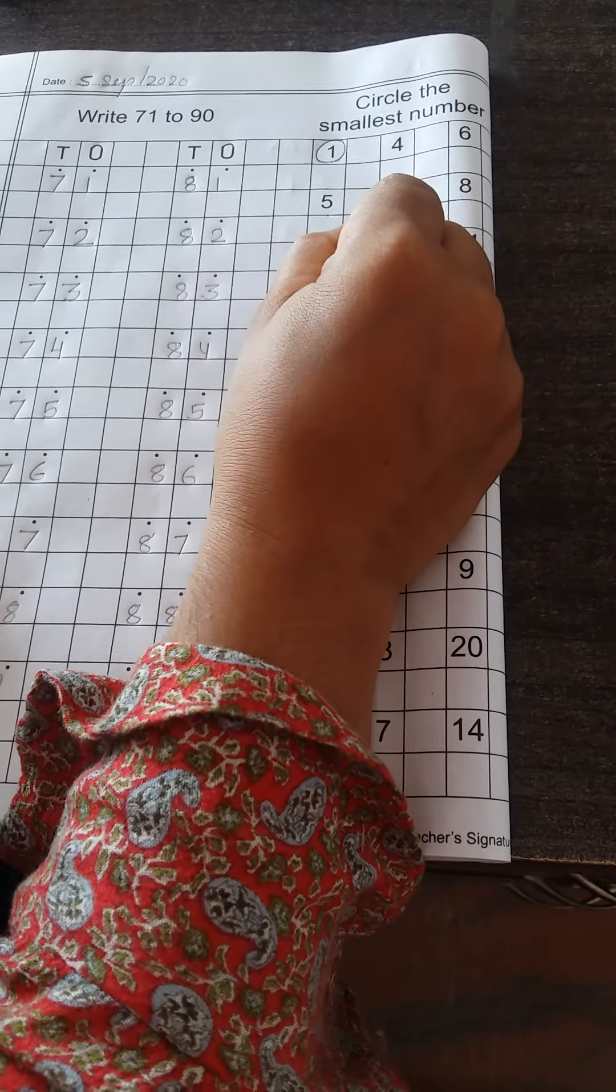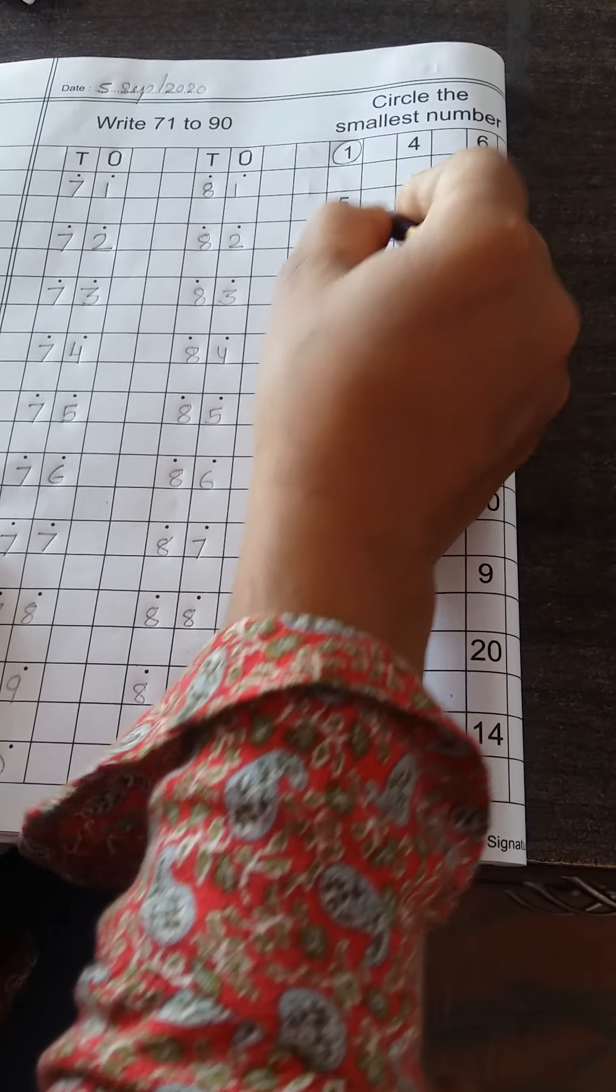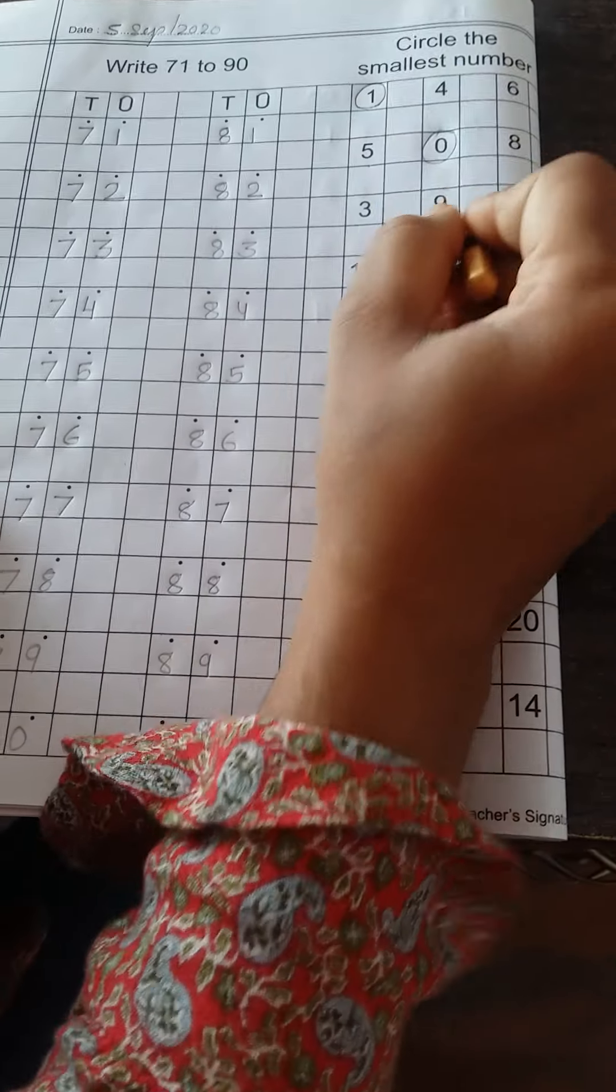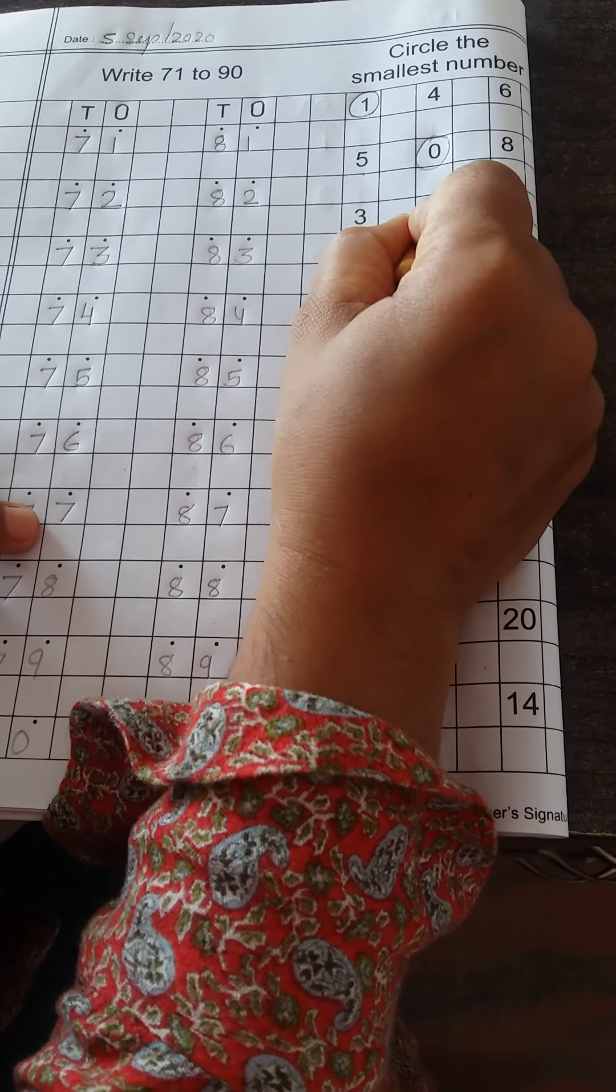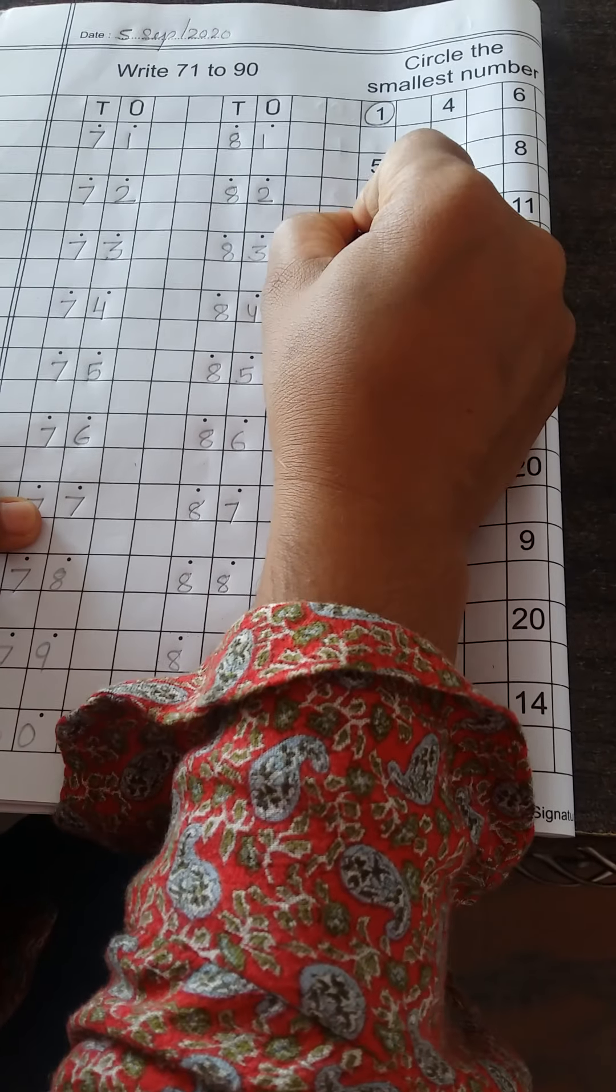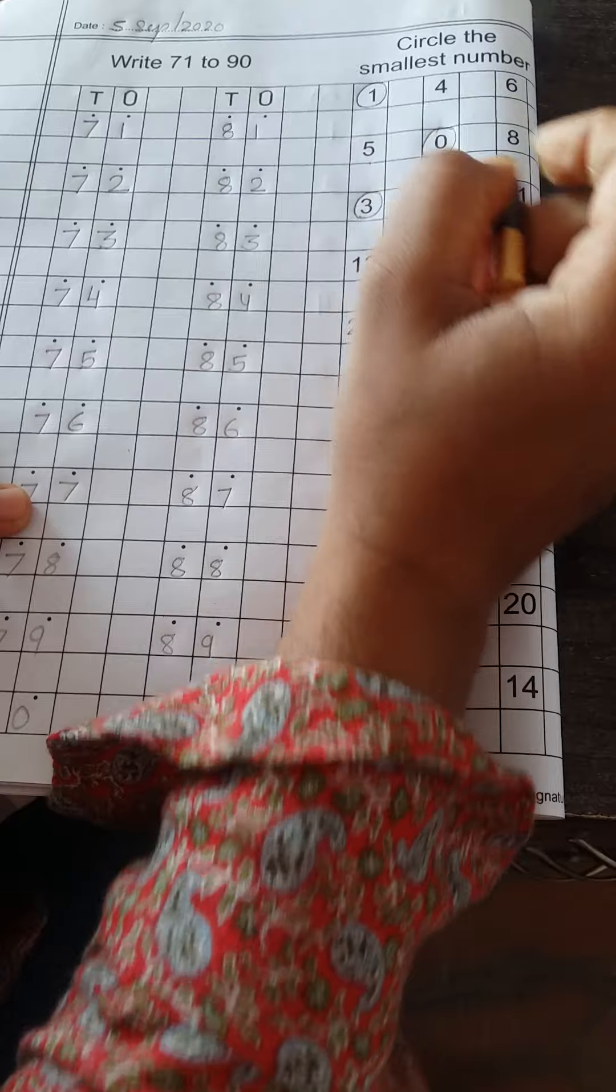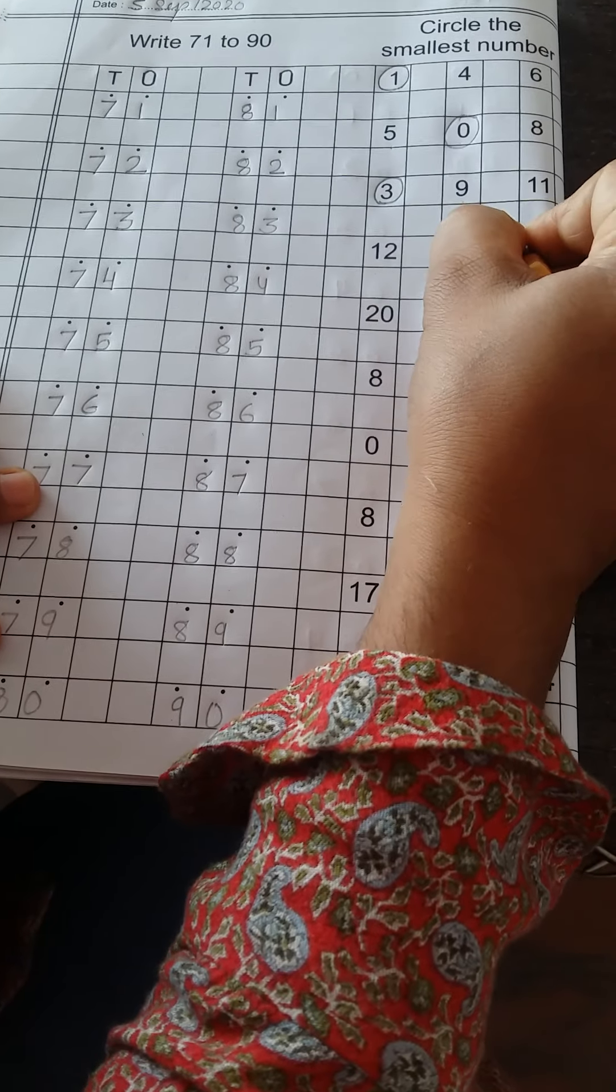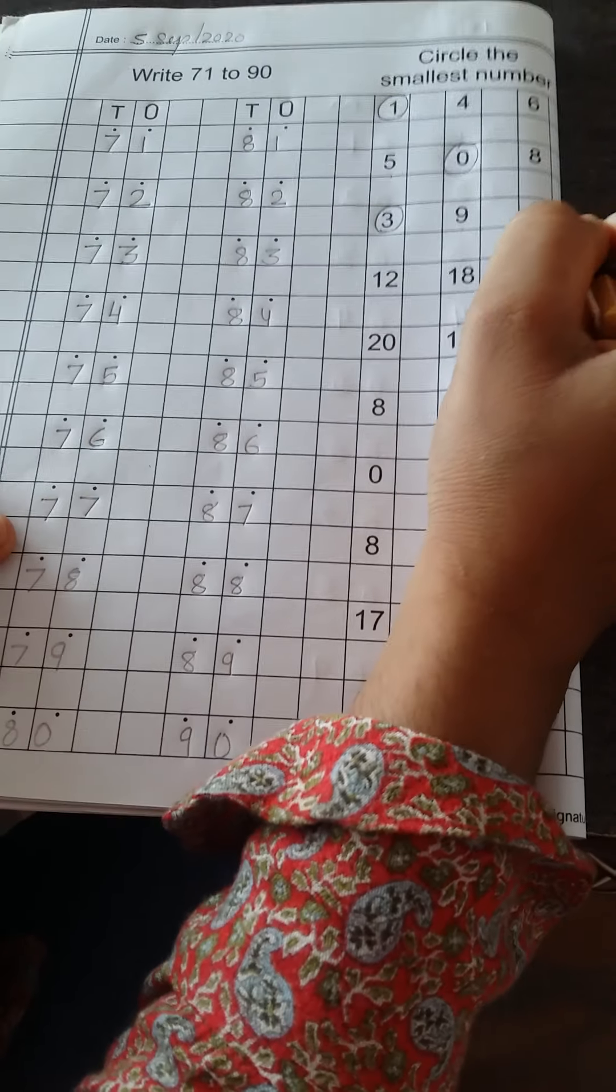Next. 5, 0, and 8. 0 is smallest number. Next. 3, 9, and 11. 3 is smallest number. Next. 12, 18, and 10. 10 is smallest number.